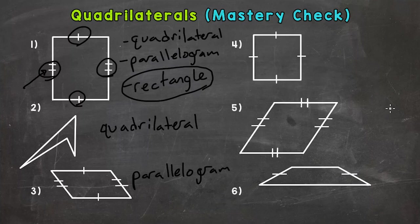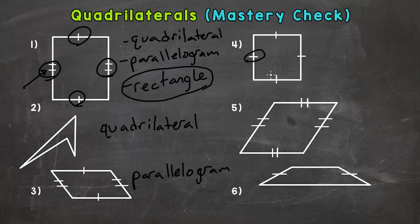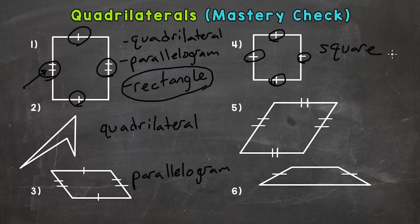Let's take a look at number four. Number four is a quadrilateral and a parallelogram, which means two pairs of parallel sides. It also has four congruent sides — four sides that are the same; each side has a dash, meaning they are all the same. And it has four right angles. So this is the most specific quadrilateral of them all: the square.